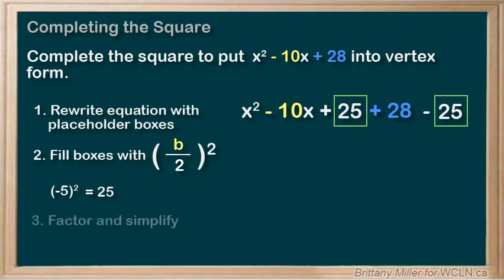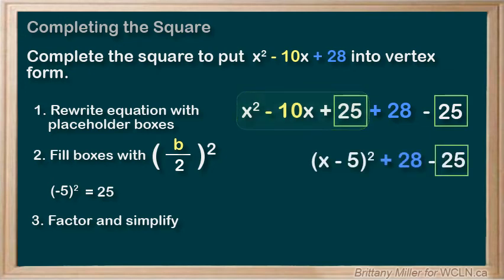Step three. This part is going to factor into x minus 5 squared and then we just simplify what's left over leaving us with an answer of x minus 5 squared plus 3.